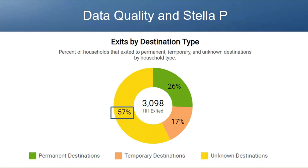In this chart, we see the impact that missing exit destination has on the measure of exits to permanent housing. With 57% of households exiting to unknown destinations, we don't have an accurate understanding of how the homeless crisis response system is doing at helping people get into housing. Once you've identified a potential data quality issue in Stella P, you might need to look elsewhere for more information. In this example, you'd want to look at project-level reports to understand which projects have high rates of missing destination data, and then work with providers to increase data quality.